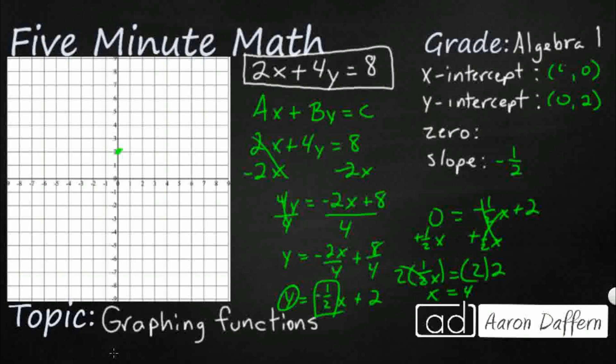So the x-intercept is 4 comma 0. My 0 is actually going to be 4. And there we go. We have a slight negative downward slope. And that is my function.